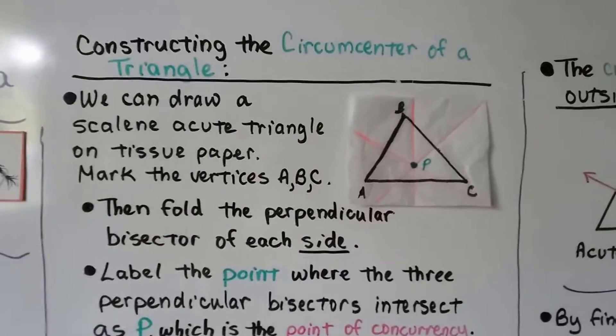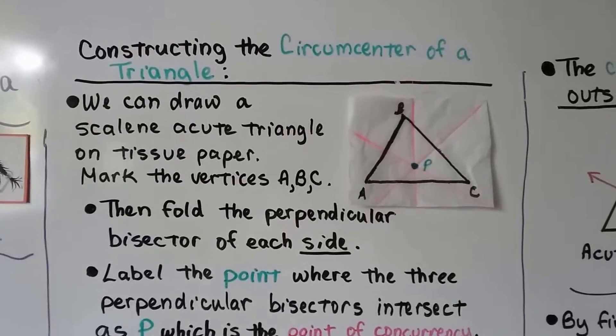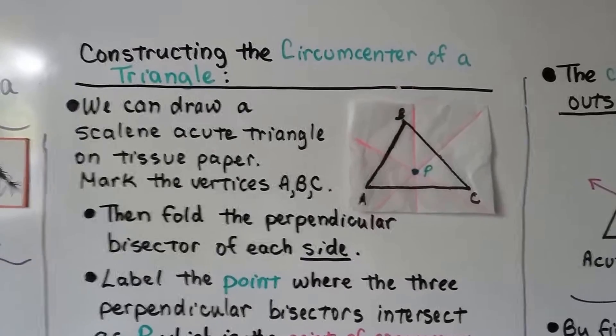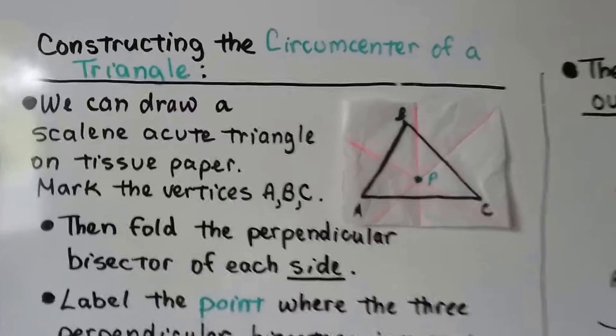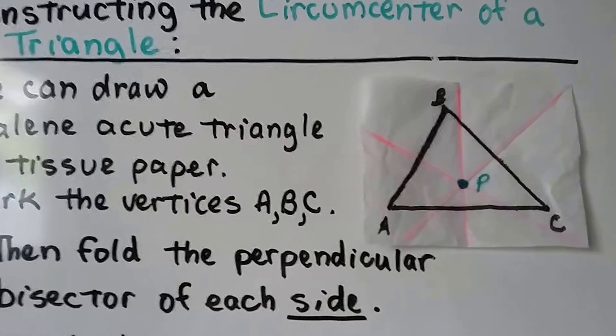Constructing the circumcenter of a triangle, we can draw a scalene acute triangle on tissue paper and mark the vertices ABC. That's what I did. And then, fold the perpendicular bisector of each side.